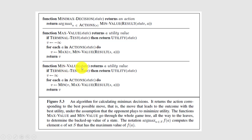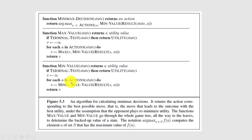The function min_value takes state as input. Here we calculate the min value. If it is a terminal state, it returns the utility. Then, for each action in actions of state, we calculate the min from the min_value of the result of state and action. This is the algorithm for calculating the minimax decision.